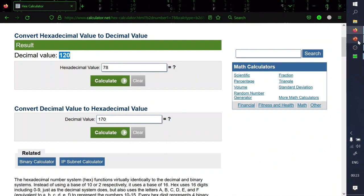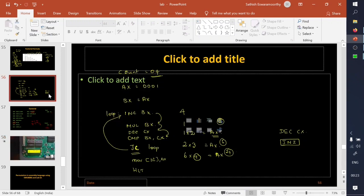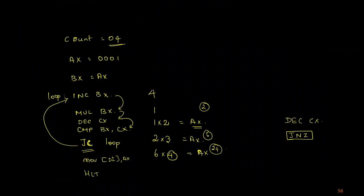The final result is 120, which I can verify: 5 factorial = 5 × 4 × 3 × 2 × 1. So 5 × 4 = 20, multiplied by 3 is 60, multiplied by 2 is 120. The expected output is 120 and in hexadecimal it is 78 — which is exactly what we got in the output.